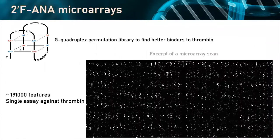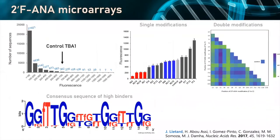Here is a small excerpt of the microarray scan. You can hopefully see that there are differences in brightness — differences in fluorescence — and that's telling us about the strength of the binding. We can start looking manually at the data to figure out how specific introduction of FANA at a specific position affects the actual binding affinity. For instance, we have our control — the unmodified full DNA aptamer — and we decide that whatever is brighter than that must be a stronger binder to thrombin.